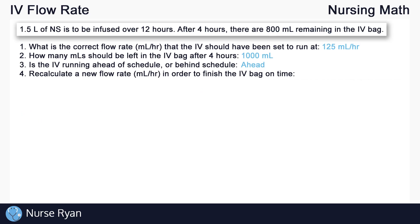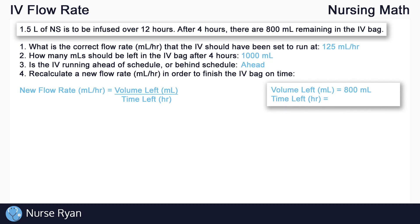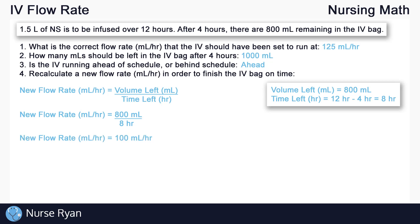Lastly, question number 4: recalculate a new flow rate in mils per hour in order to finish the IV bag on time. We use the same flow rate formula, but this time with the volume left over and the time left over. The volume remaining comes straight from the question: 800 mils. The time remaining is the total time minus the time elapsed: 12 hours minus 4 hours equals 8 hours. Plugging into our formula: flow rate equals 800 mils divided by 8 hours, for an answer of 100 mils per hour. That will be the new flow rate to finish the bag on time.